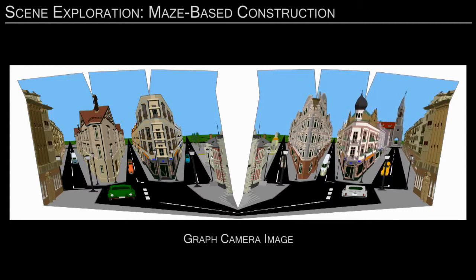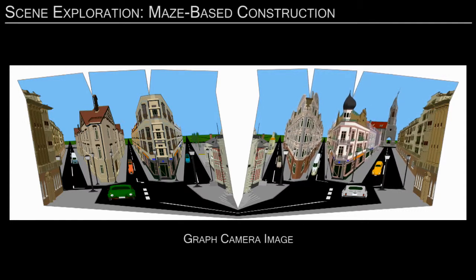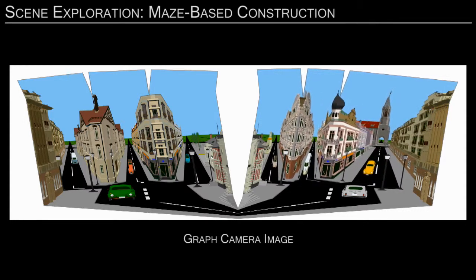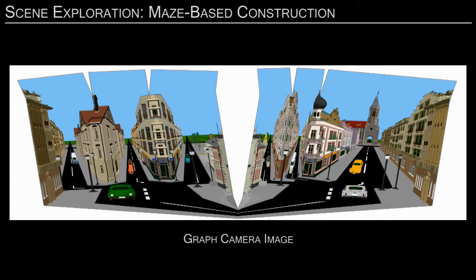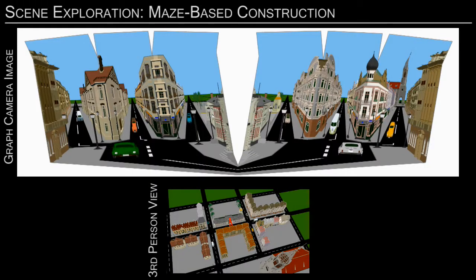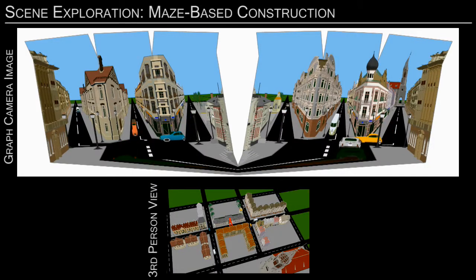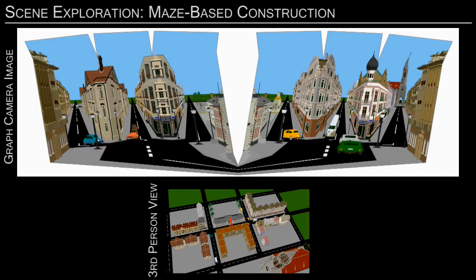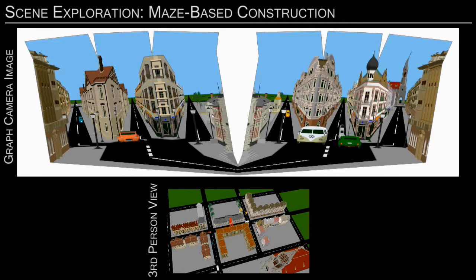The user can change the ray-split ratios interactively to emphasize different scene regions. The third-person view shows the current user position with the red quad. Objects are rendered transparently as they cross the user quad.